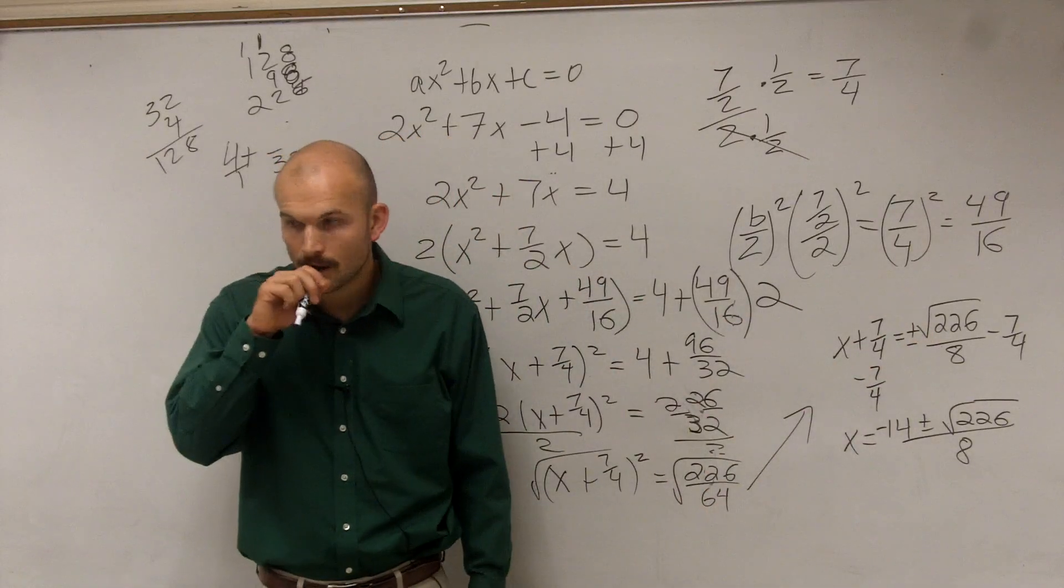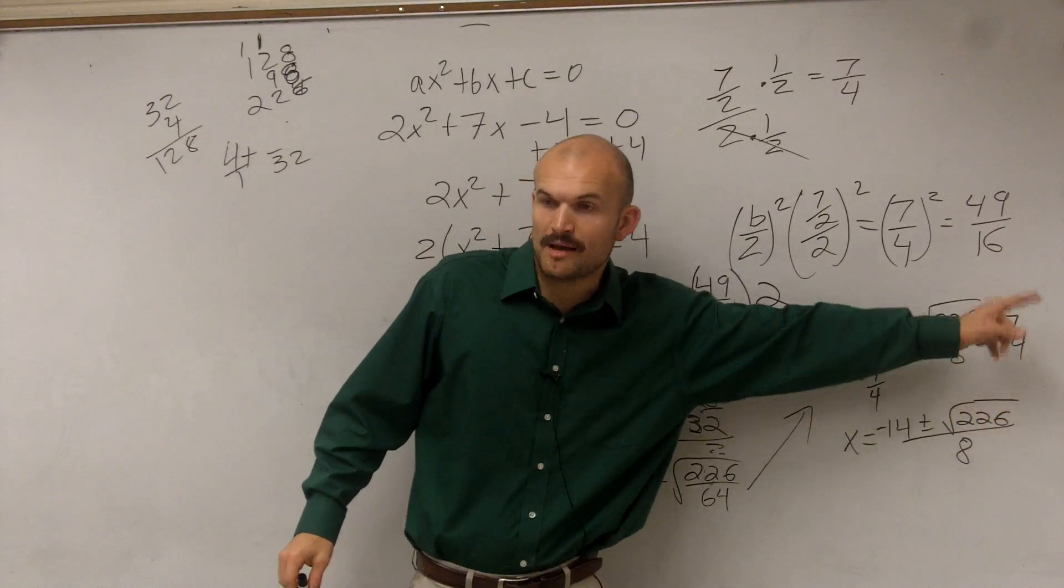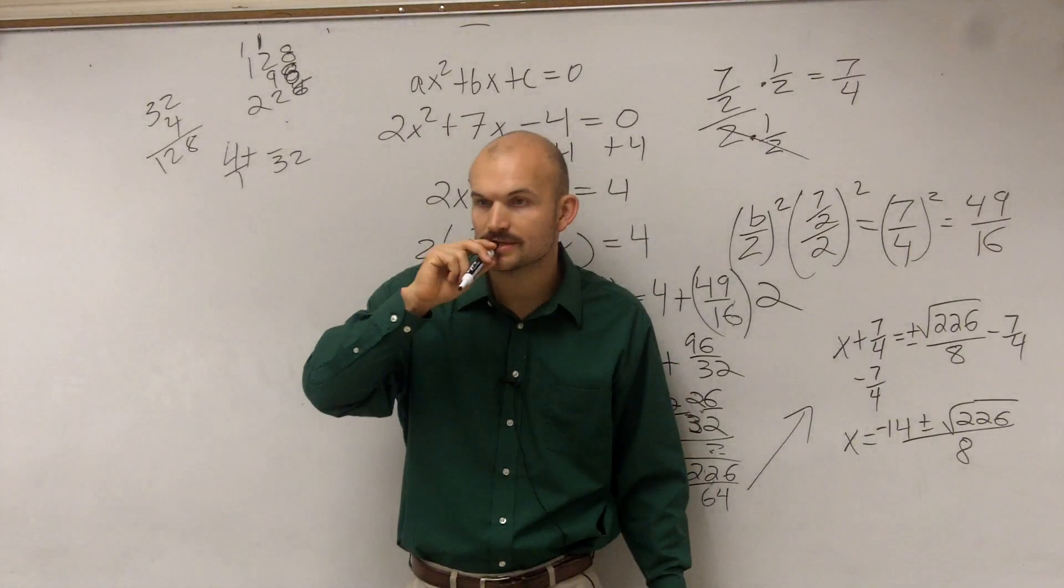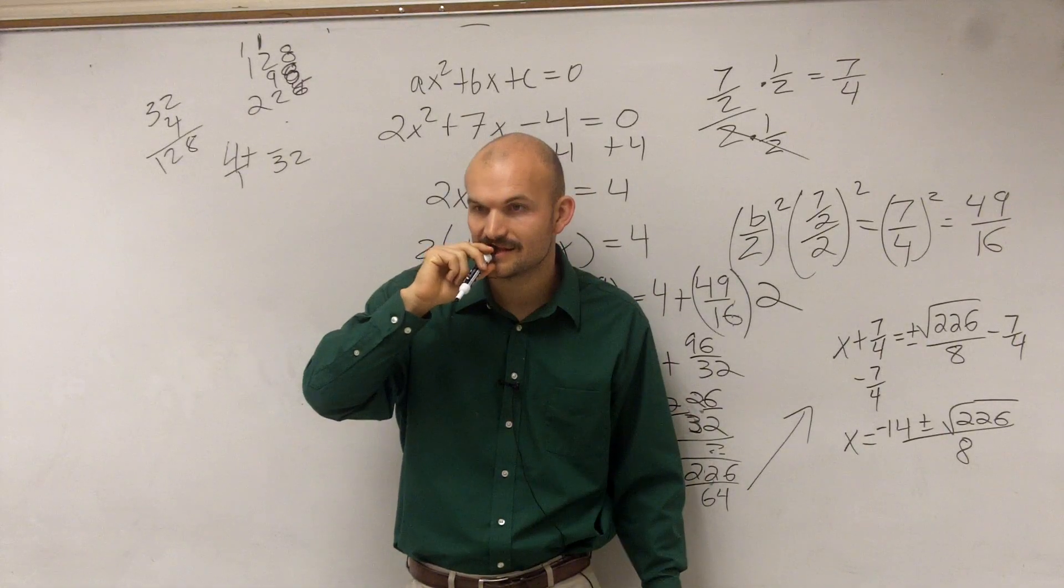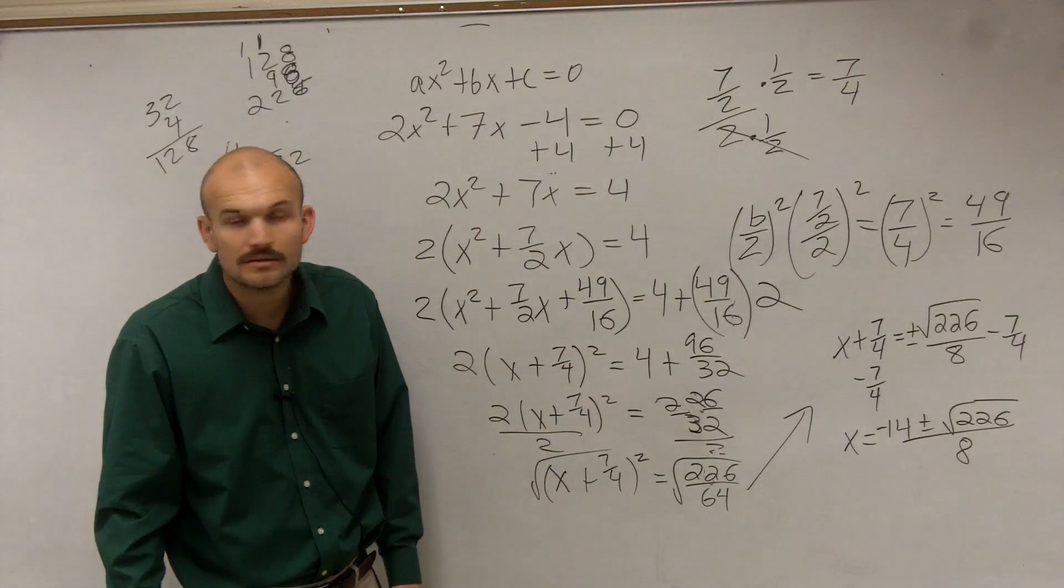Wait. 32. Because these are not like denominators. So to get them to be like denominators, I had to multiply by 2 over 2. Go ahead. Yes. Question? No?